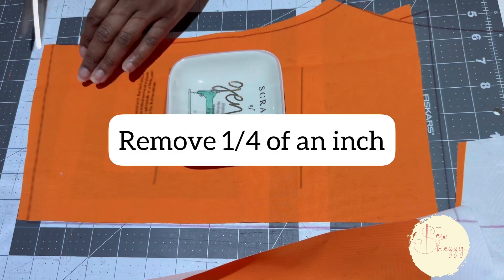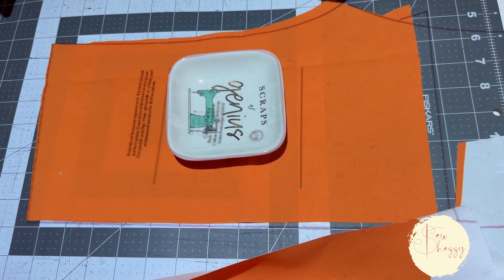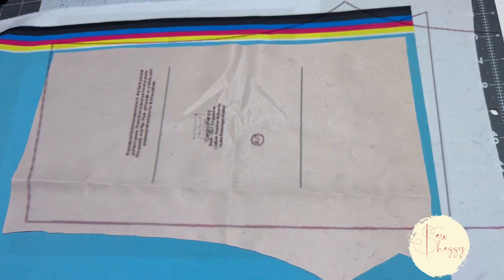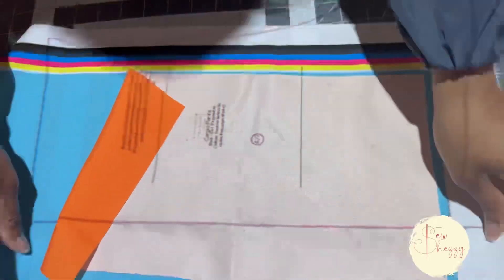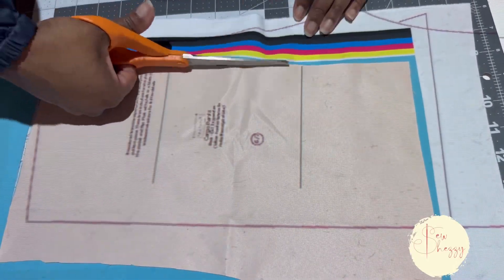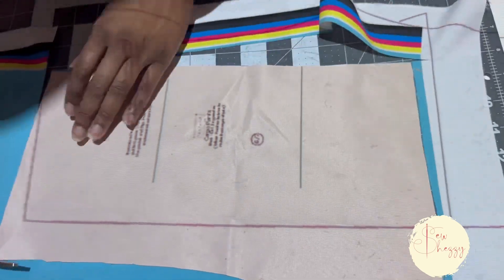And then since I made a modification to it, I went ahead and used the one that I already cut to create the opposite side. But this is going to be a color block, so it's going to be orange on one side, blue and yellow on the other side, so just cutting that all out.